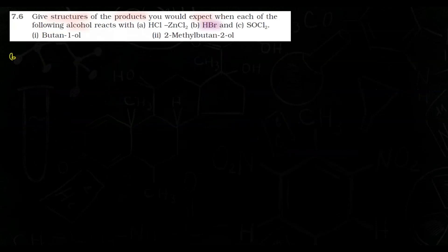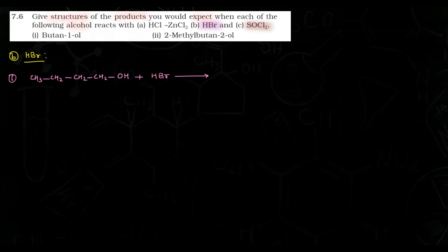Next part kya hai? HBr ke saath aapko reaction karwani hai. First part hai butan-1-ol: CH3-CH2-CH2-CH2-OH. Reaction karwa rahe hain HBr ke saath. Pehla step hai protonation of alcohol. HBr dissociates to H+ and Br−. Oxygen ke paas lone pair of electrons hai, so yeh H+ le leta hai, forming H2O leaving group and a positive charge on oxygen.